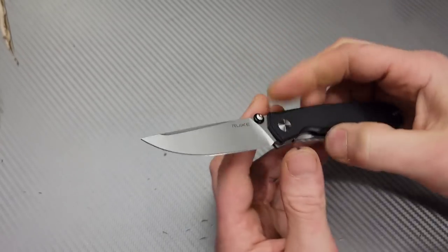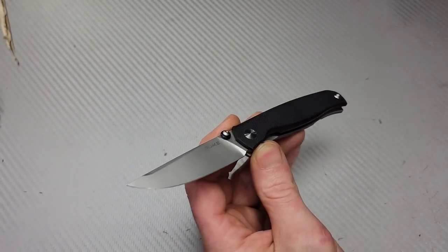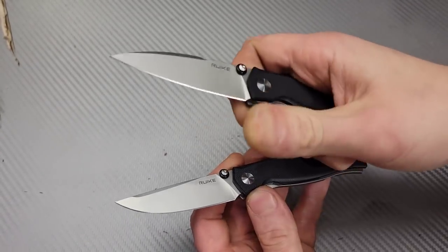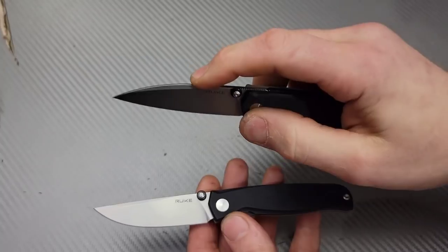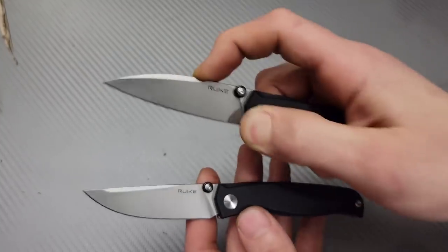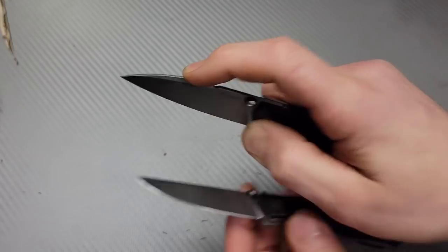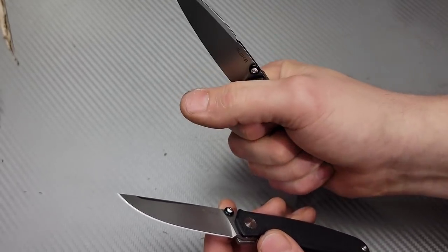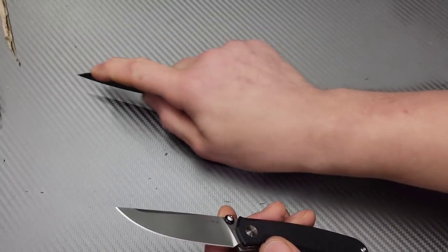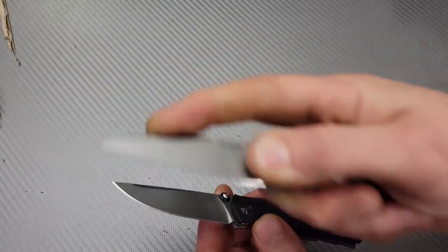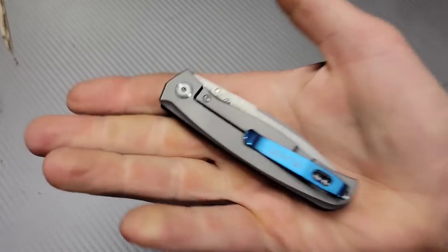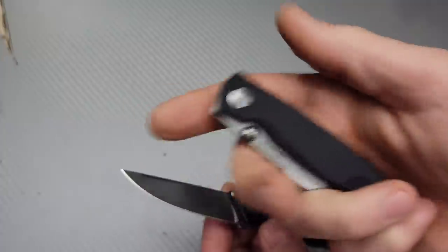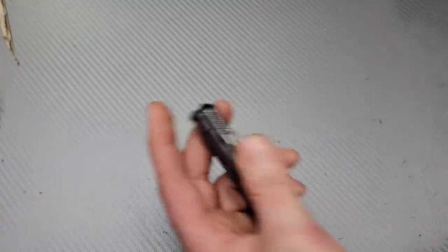Now this one does come in a couple different blade shapes so you can get this exact same one in a wharnclife. A lot of people might prefer this blade shape because of the size. You can't get a full four finger grip but it'll be beneficial for utility cuts, which is really nice for a knife of this size.